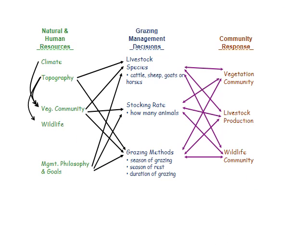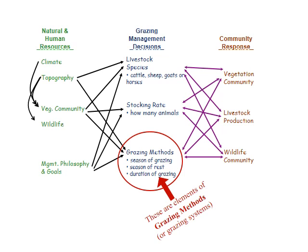As a range manager, you have a certain set of natural and human resources. The actual decisions you can make in grazing management include the livestock species, the number of animals, stocking rate which we discussed previously, and then this grazing methods concept. The grazing method controls season of grazing, season of rest, and the duration of grazing. Those are the elements of a grazing method or grazing system.